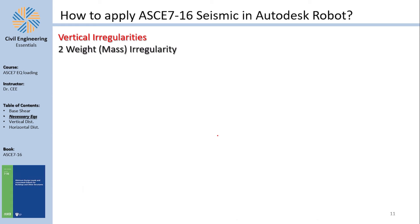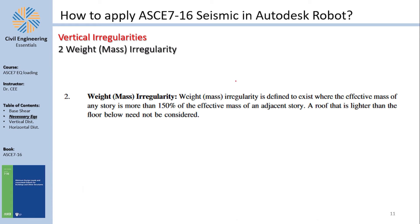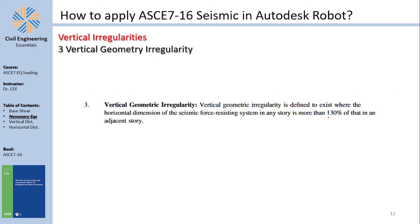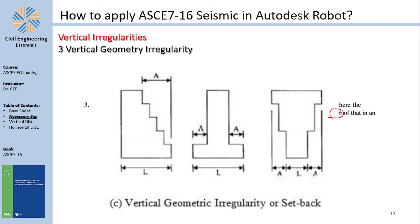Mass/weight irregularity: a story cannot weigh more than 150% of adjacent stories, with the roof being an exception. Geometric irregularity applies when the section of the lateral force resisting element changes by more than 130% from one story to the next.